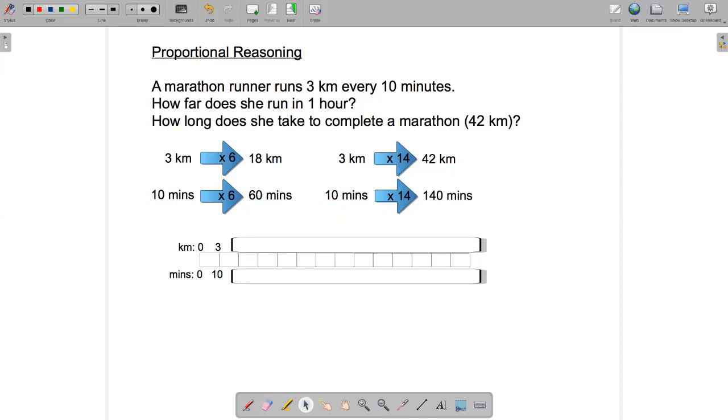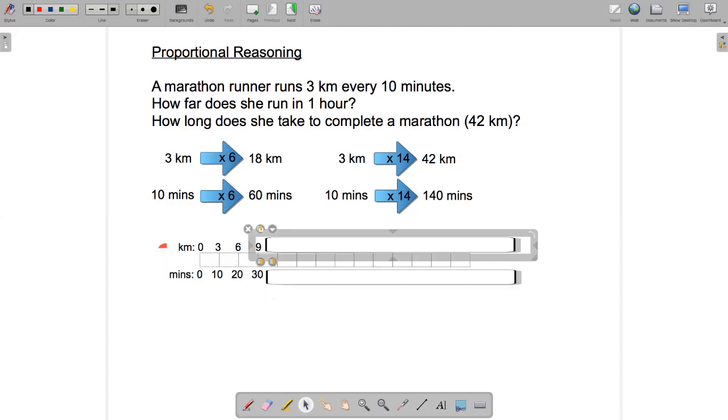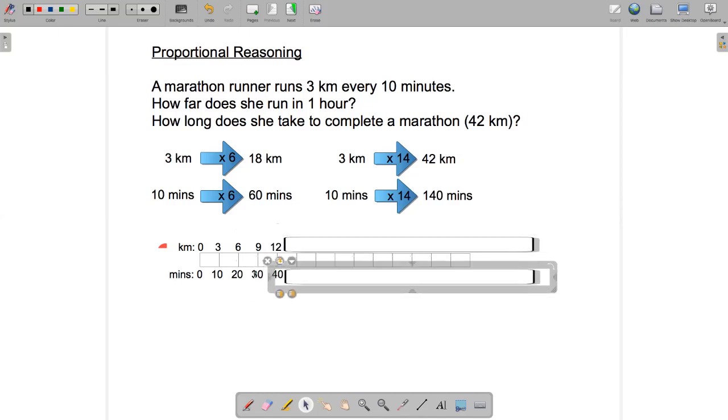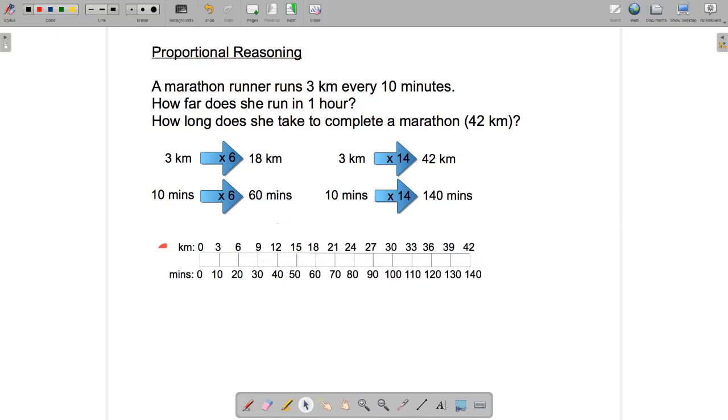Another way of thinking about this kind of problem is to use a double number line. So we can set up our number line here with kilometers as one line, minutes as the other line. And we start with zero kilometers and zero minutes. The first tick mark is at three kilometers, or 10 minutes. The second tick mark will be at six kilometers, or 20 minutes. And then the next one will be at nine kilometers and 30 minutes, and then 12 kilometers and 40 minutes, and so on. We just keep going until we've got enough tick marks on our double number line to answer the two questions.